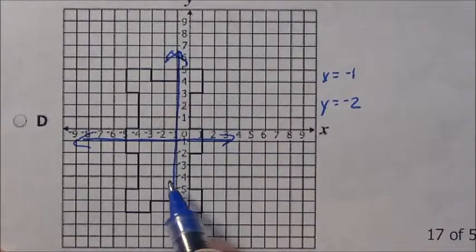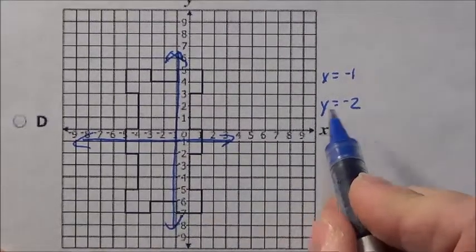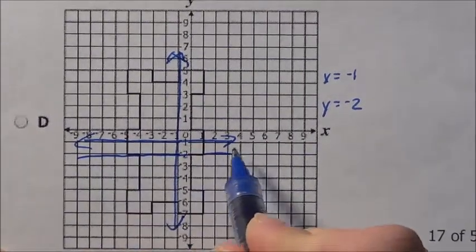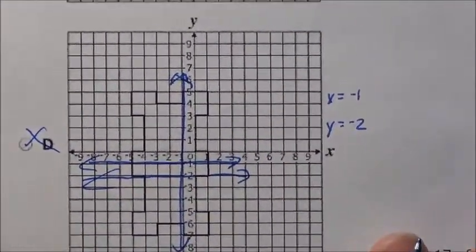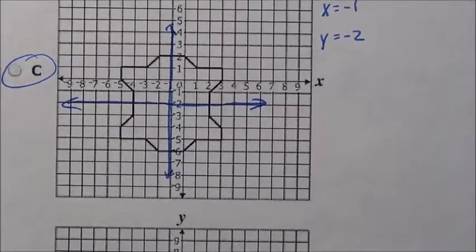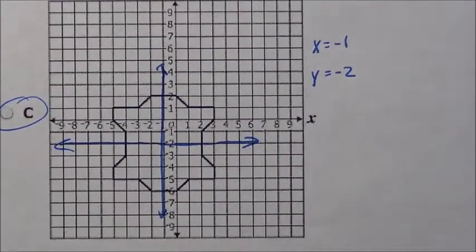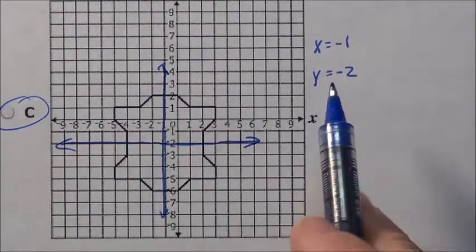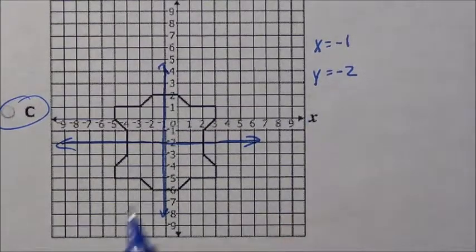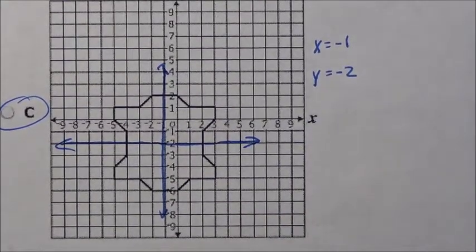Here's the line x equals negative 1, which is not in the middle. Y equals negative 2 would have been right here, which also wouldn't have been in the horizontal position, so D is definitely out. So our answer is going to be C. That's the polygon where lines of symmetry of x equals negative 1 and y equals negative 2 both work. Option C is our answer.